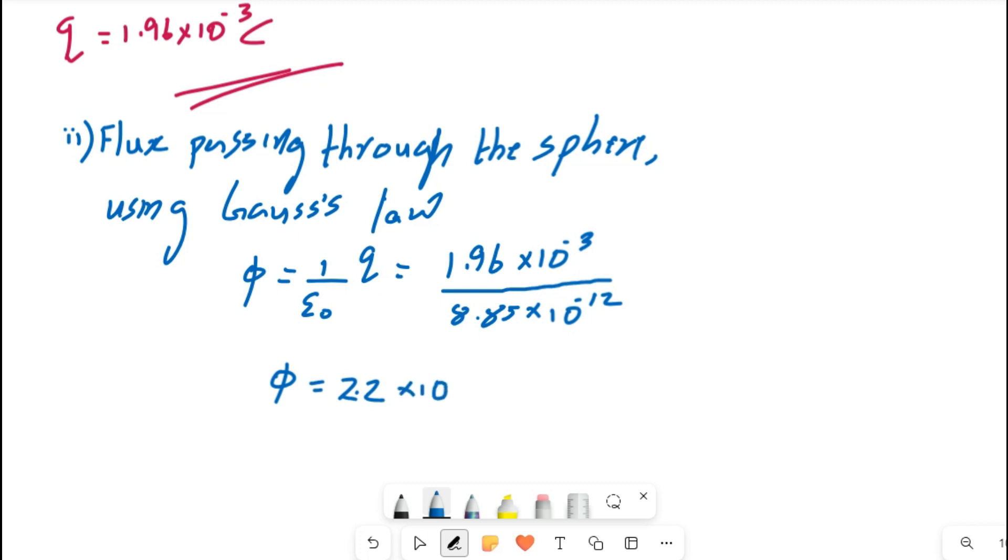So phi is equal to, after dividing you will get it, 2.2 into 10 raised to 8 newton meter square per coulomb.